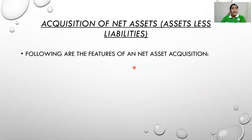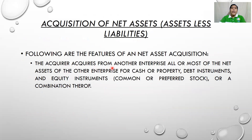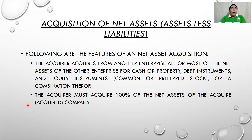These are the features of a net asset acquisition. The acquirer acquires from another enterprise all or most of its net assets — for cash, property, debt instruments, or equity instruments such as common or preferred stock, or a combination thereof. The acquirer acquires all assets, assumes all liabilities and equity of the acquiree. The acquirer must acquire 100% of the net assets of the acquiree, and it only applies when the acquiring company survives.